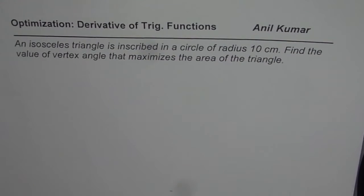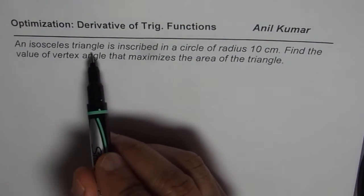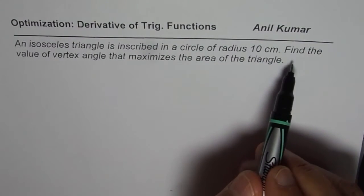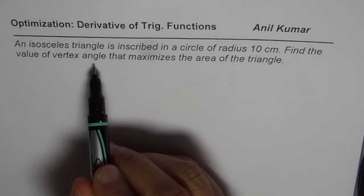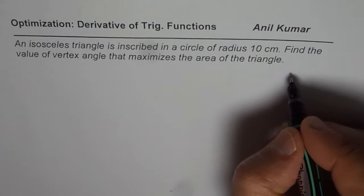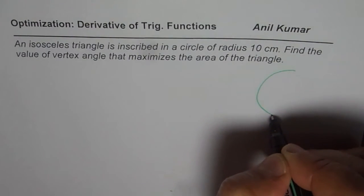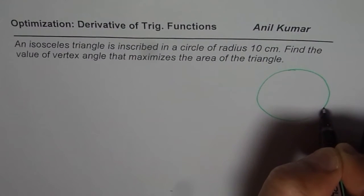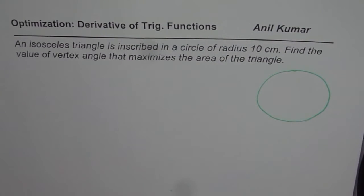I'm Adil Kumar sharing with you a challenge question on optimization. The question is: an isosceles triangle is inscribed in a circle of radius 10 centimeters. Find the value of the vertex angle that maximizes the area of the triangle. This seemingly simple question is really very difficult to answer, so I'd like your full attention.